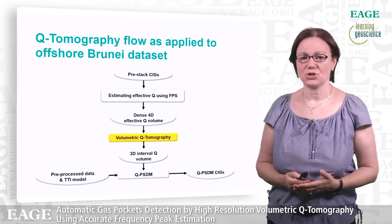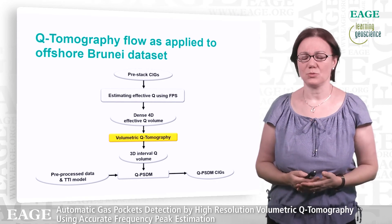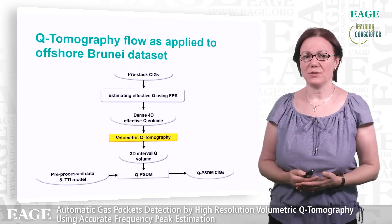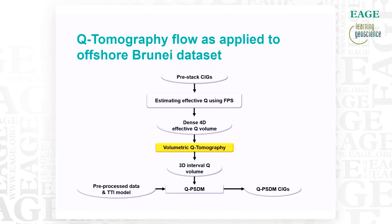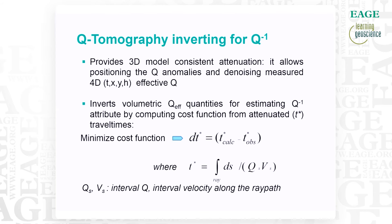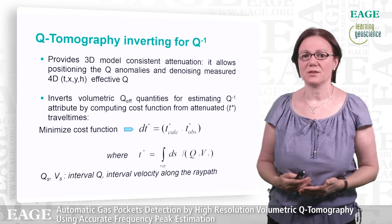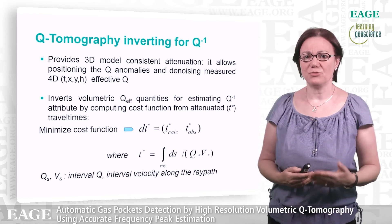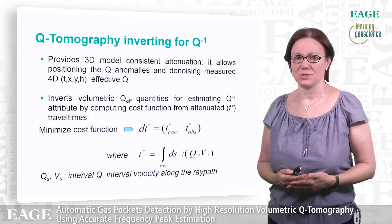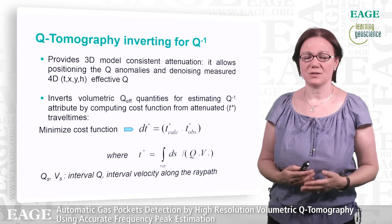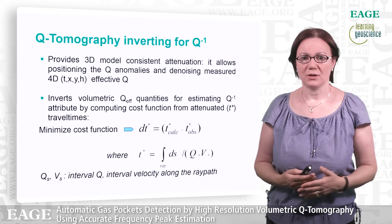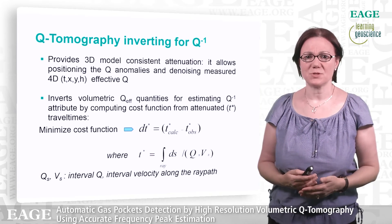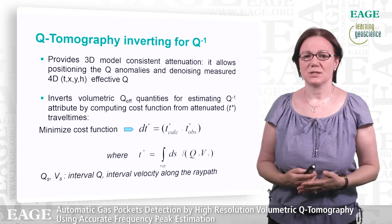Let's talk about the cost function used in the Q tomography inversion and the interval Q we got from the Brunei dataset. The Q tomography provides a consistent 3D model that allows positioning the Q anomalies and denoising the effective Q data. It inverts the volumetric effective Q quantities to estimate an interval Q model.